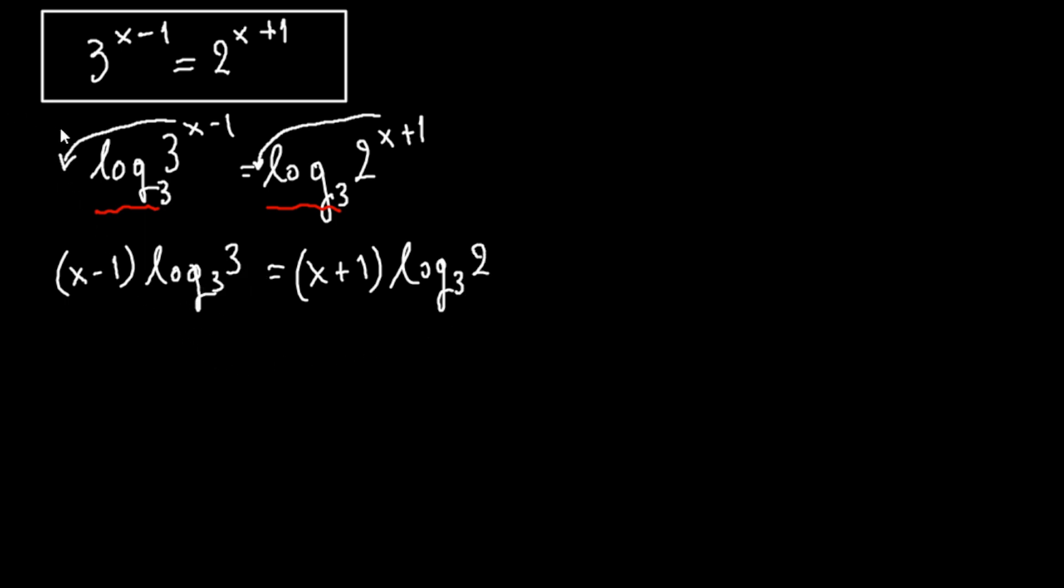Here we know that we have the same base with logarithms equals to 1. So this becomes x minus 1 equals to x plus 1 times log 2 with base of 3.